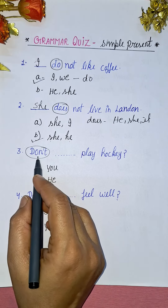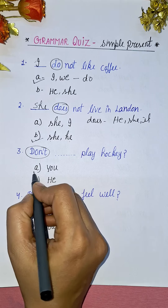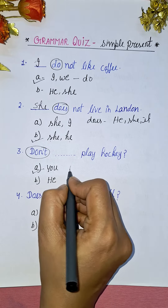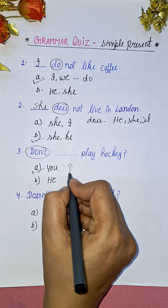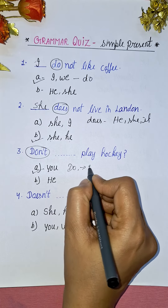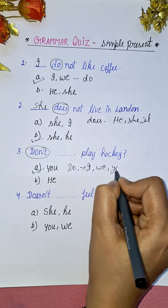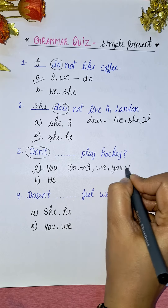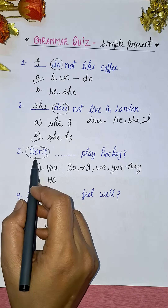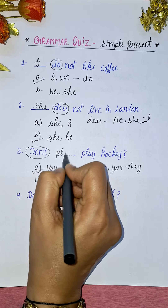Next question uses 'don't' as the keyword. 'Don't' is plural, so with 'don't' we use I, we, you, and they — all plural subjects. So the correct answer here is 'you': 'Don't you play hockey?'